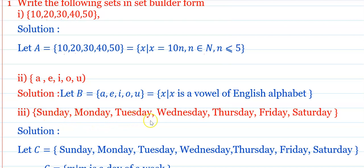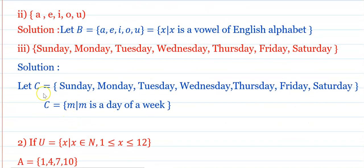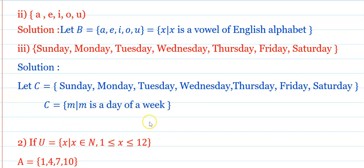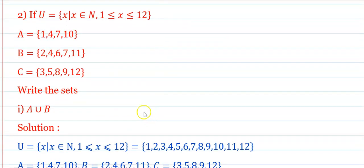Next, B = {a, e, i, o, u}, which in set-builder form is: B = {x : x is a vowel in the English alphabet}. Then C = {Sunday, Monday, Tuesday, Wednesday, Thursday, Friday, Saturday}, which is written as: C = {m : m is a day of a week}.